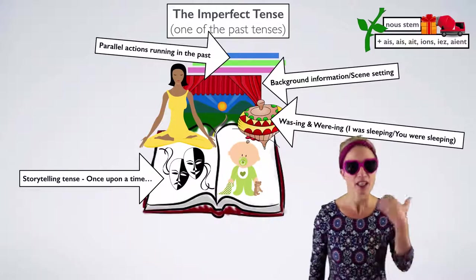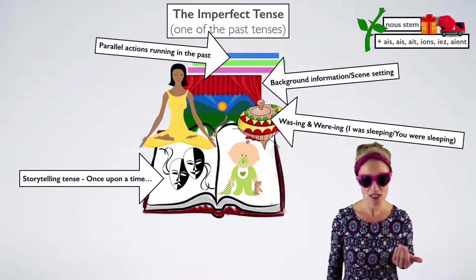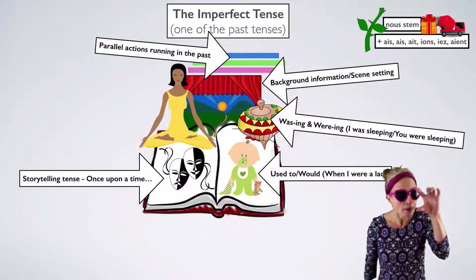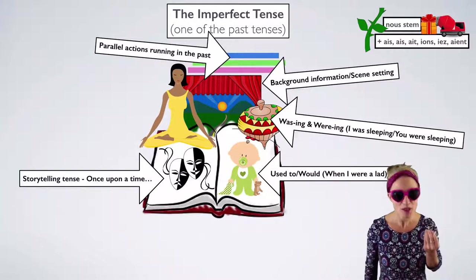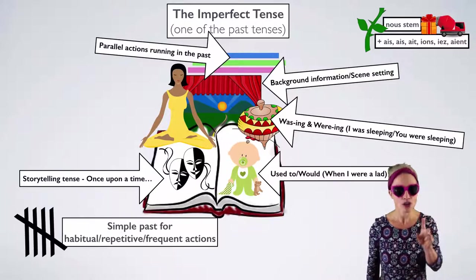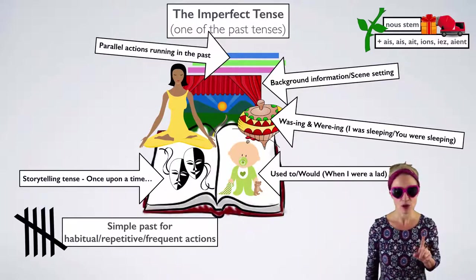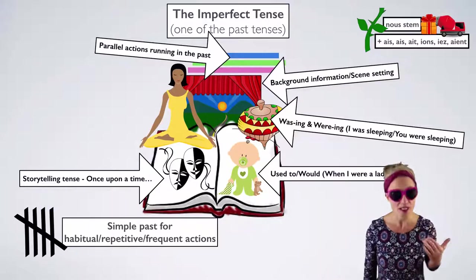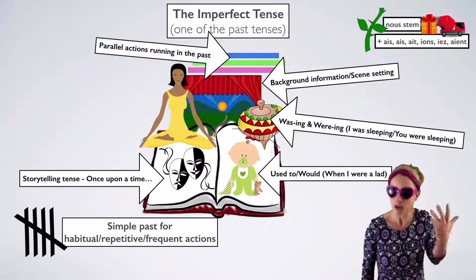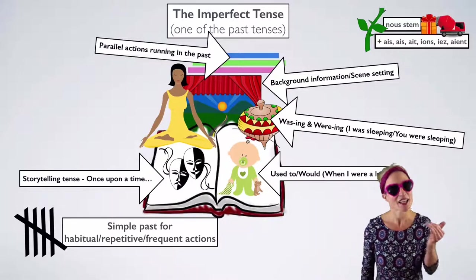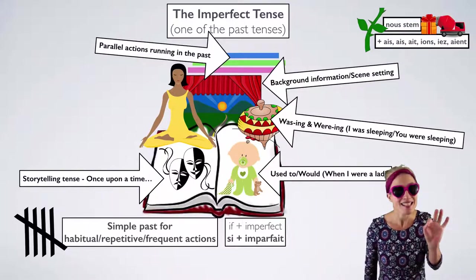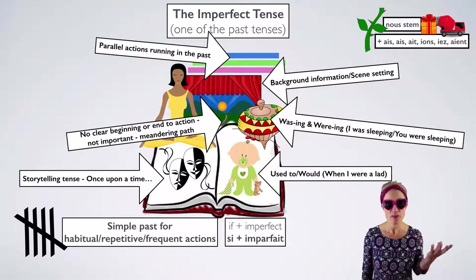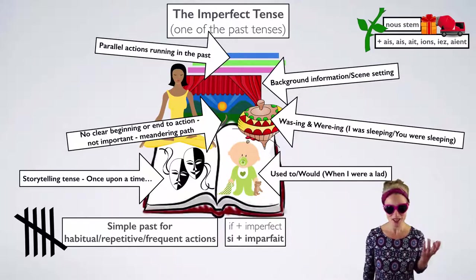I was sleeping. You were sleeping. Was-ing and were-ing. When I were a lad — that's the baby. I used to. I would do this. That's when you use the imperfect. Also for the simple past, when you are talking about habitual, repetitive, or frequent actions. 'I ate,' if you meant 'I used to eat on a regular basis,' there in French you would use the imperfect. And a special little use comes after 'if' — si plus l'imparfait.